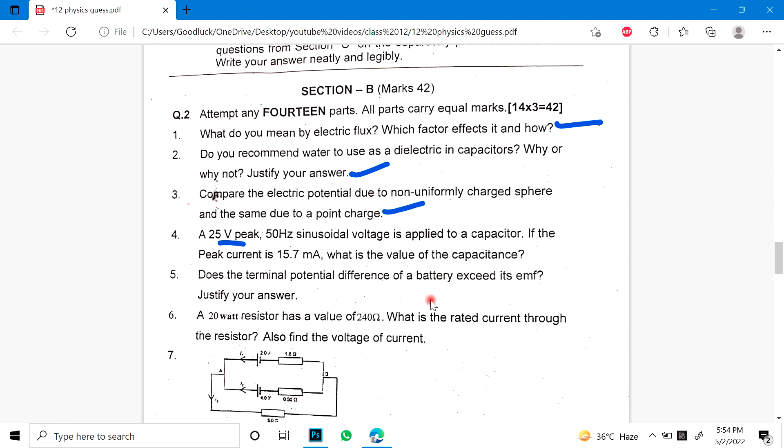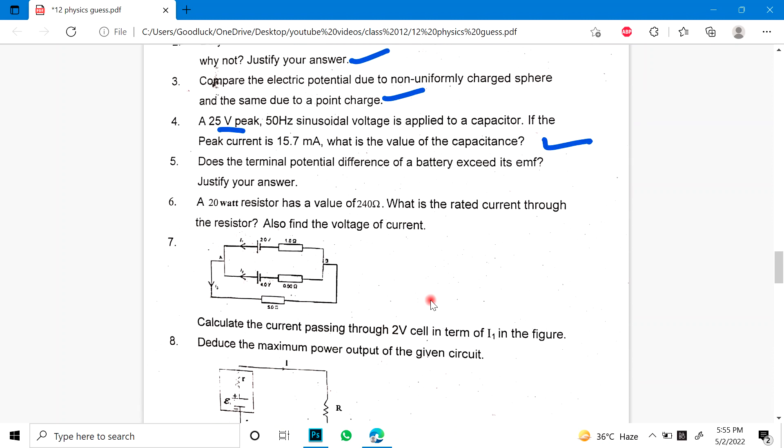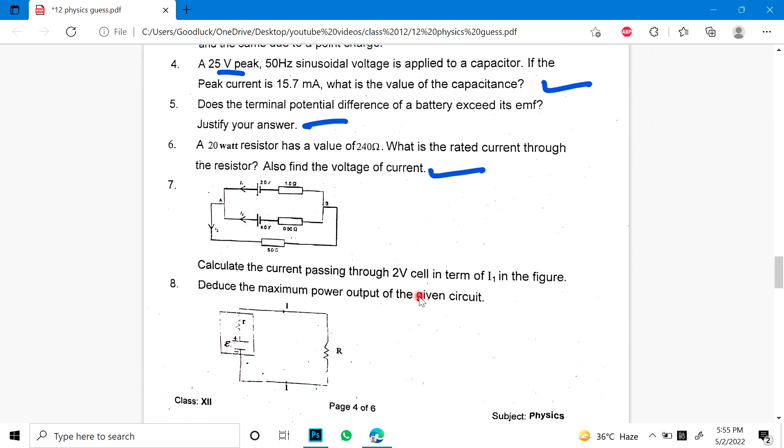4: A peak voltage 25V 50Hz sinusoidal voltage is applied to a capacitor. If the peak current is 15.7mA, what is the value of the capacitance? 5: Does the terminal potential difference of a battery exceed its EMF? Justify your answer. 6: A 20 Watt resistor has a value of 240 ohms. What is the rated current through the resistor? Also find its voltage. 7: You have given a diagram for your own current, 2V cell potential difference.